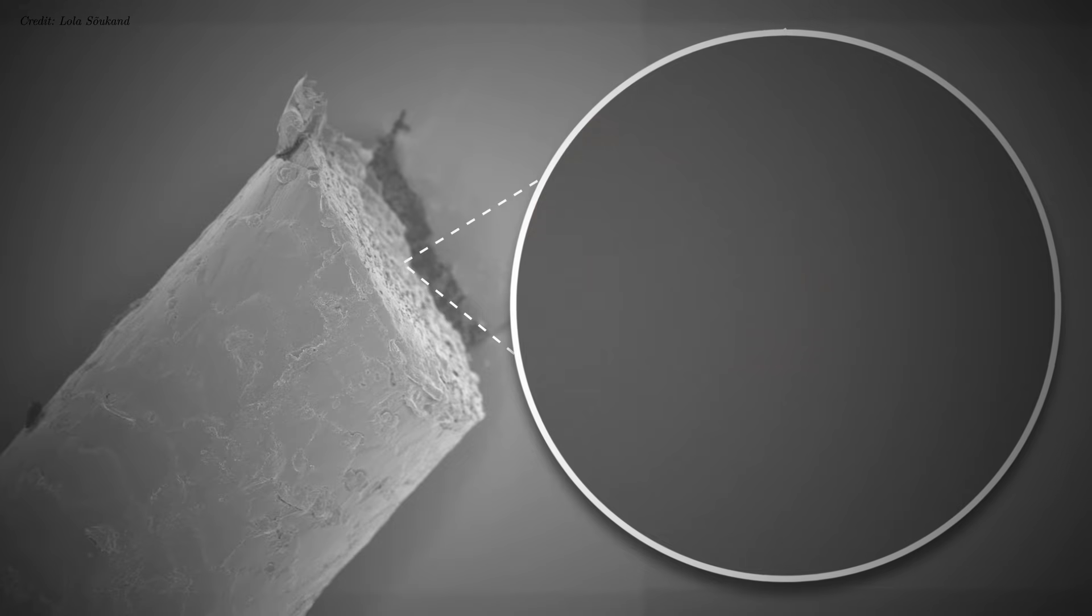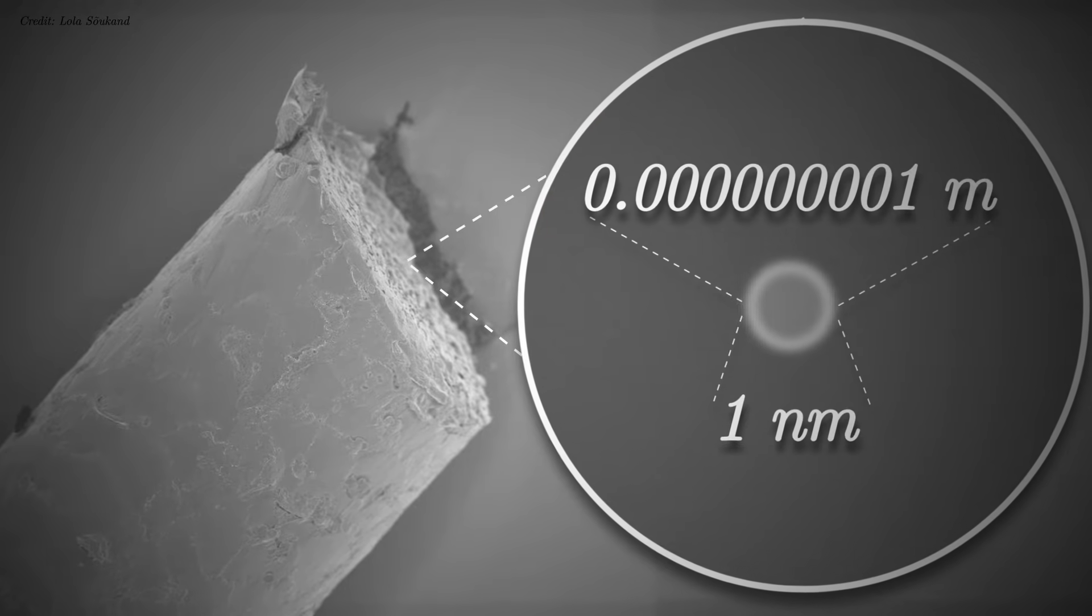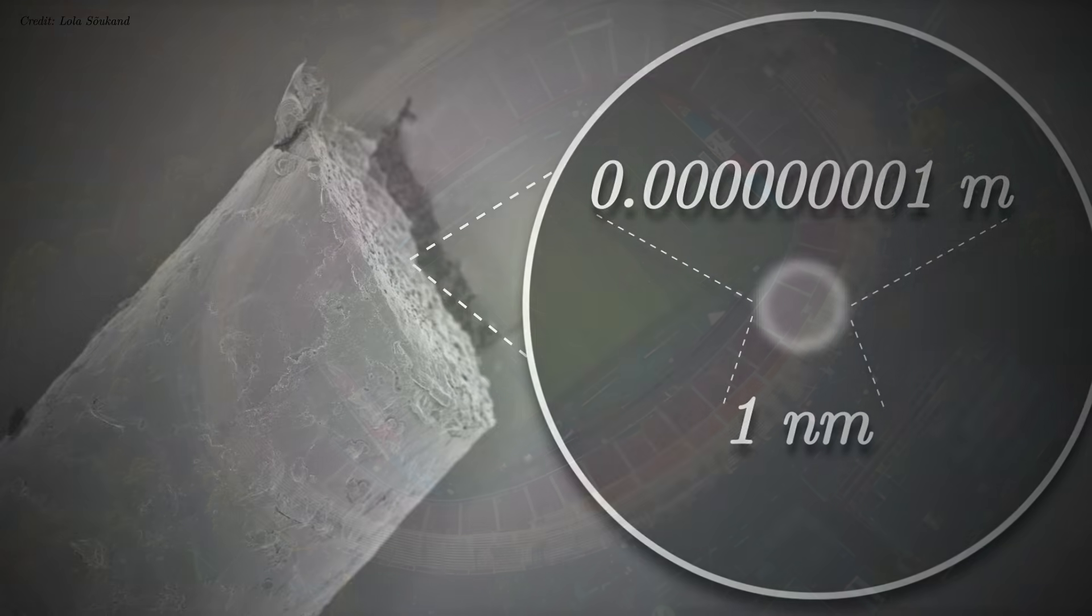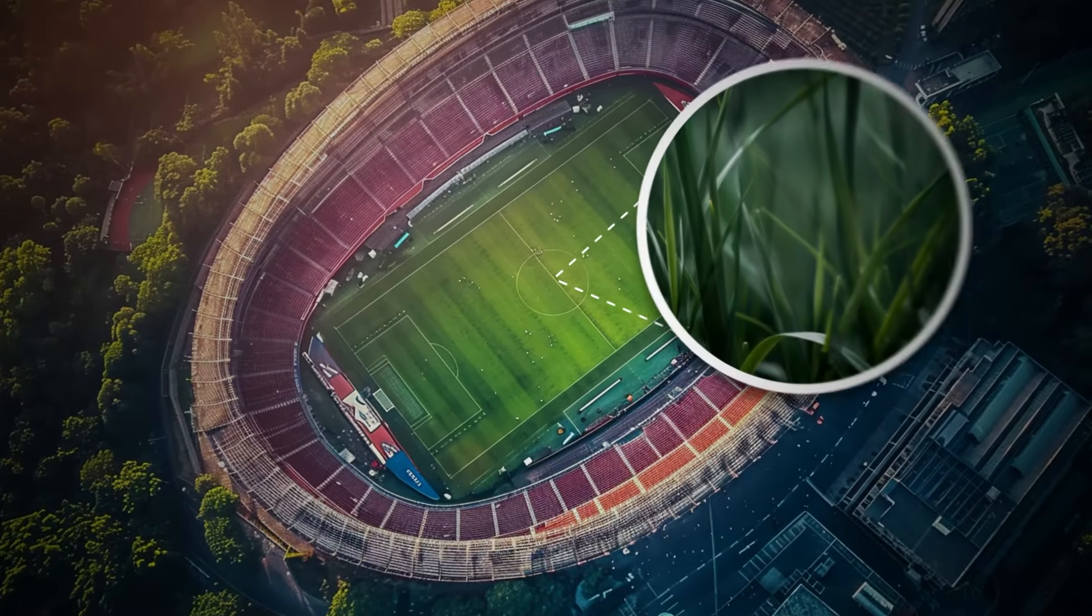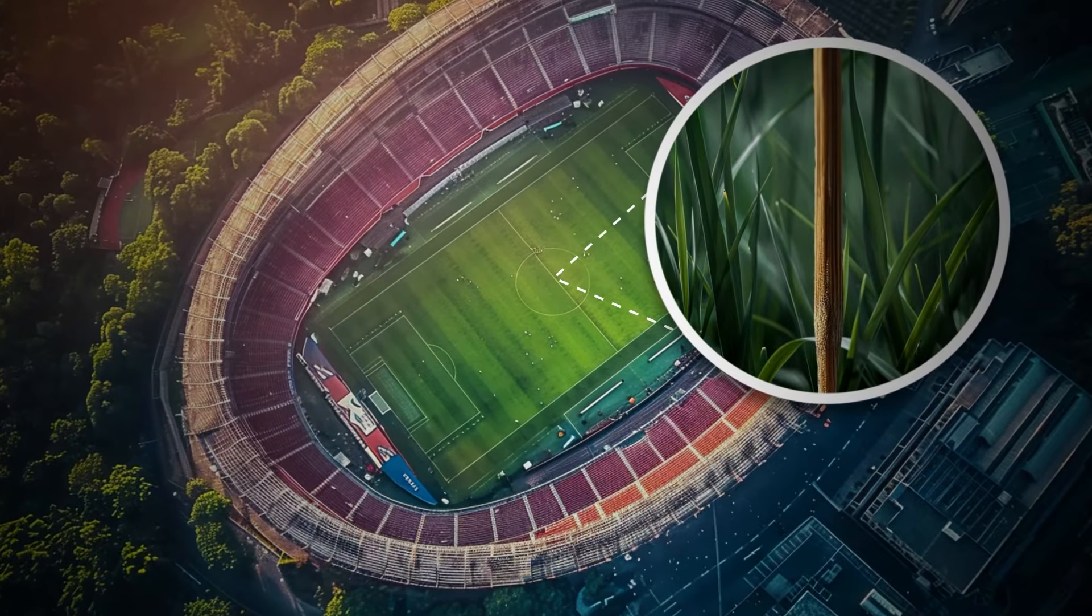For example, an FIB can drill one nanometer wide holes. That's equivalent to about eight hydrogen atoms. Boring such a hole in a hair would be like sticking a thumbtack in the middle of a big soccer stadium.